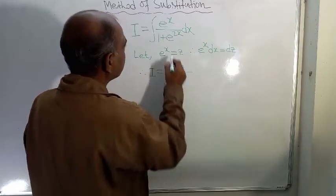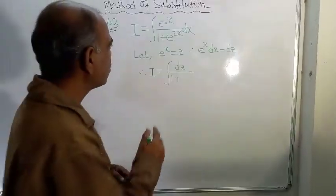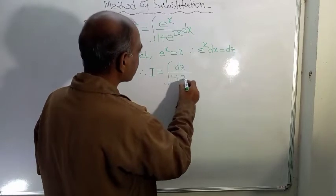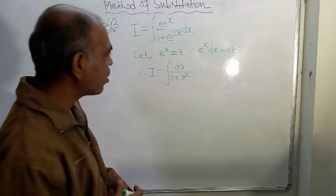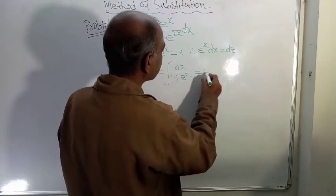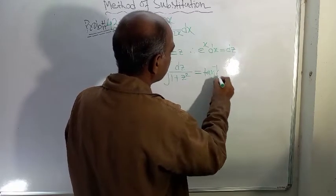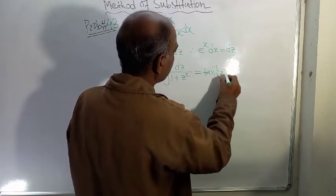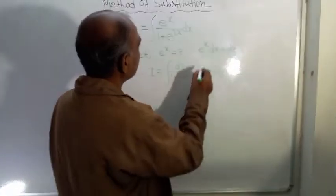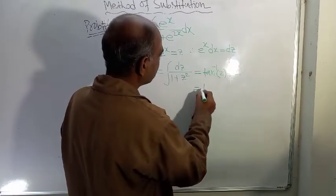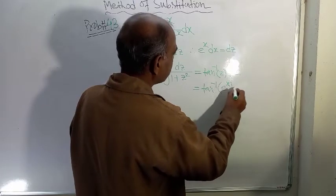Therefore, integration I equals dz divided by 1 plus z squared, since e to the power x whole square is z squared. And you know that the integration of dz by 1 plus z squared is tan inverse z.